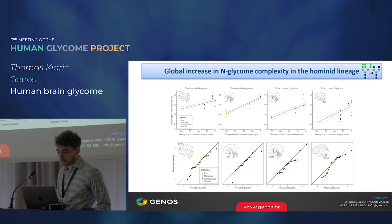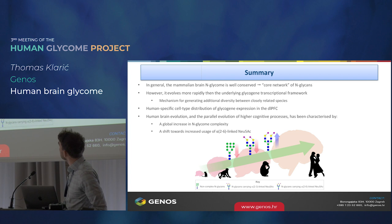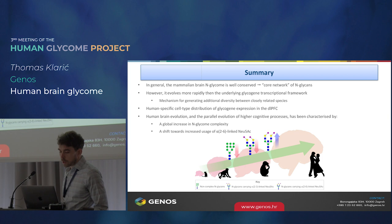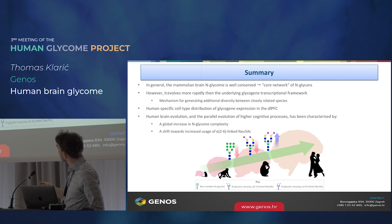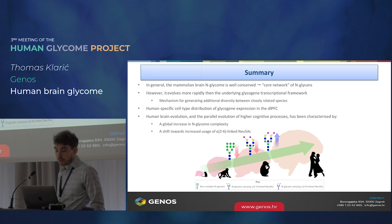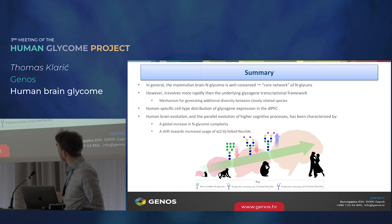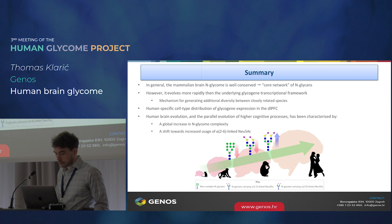To summarize: the mammalian brain N-glycome is very well conserved, and we've identified a core network of N-glycans. Even so, it evolves more rapidly than the expression of the underlying glycogenes. We found human-specific cell-type distribution of glycogene expression. And we've identified a couple of evolutionary trends in the human lineage: human brain evolution has been characterized by a global increase in N-glycome complexity, as well as a shift towards increased usage of alpha-2,6-linked sialic acid. We don't yet fully understand the significance of these trends — that will no doubt form the basis of future investigations.